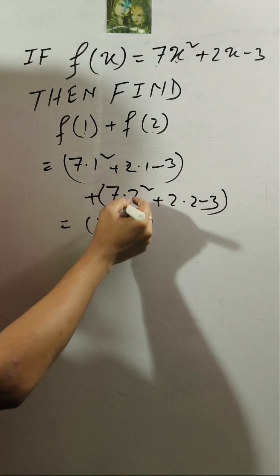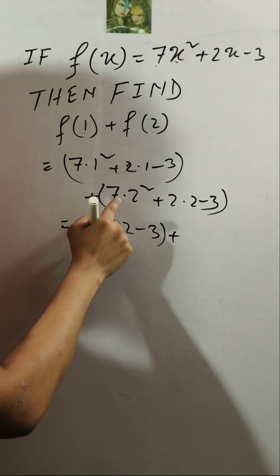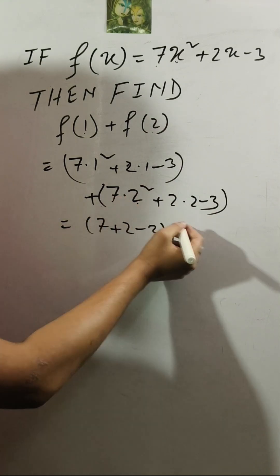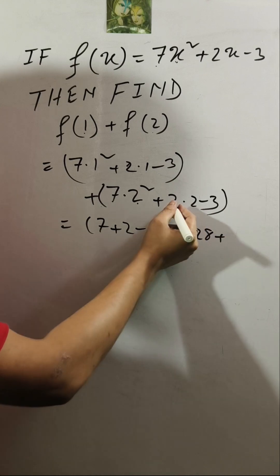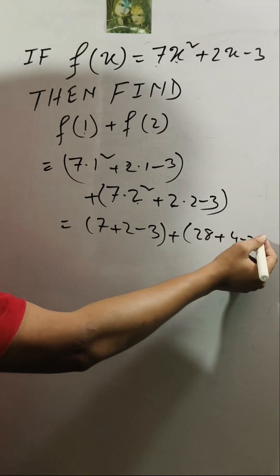7 plus 2 minus 3, plus 7 into 2 square—2 square is 4, 4 into 7 is 28—plus 2 into 2 is 4, minus 3.